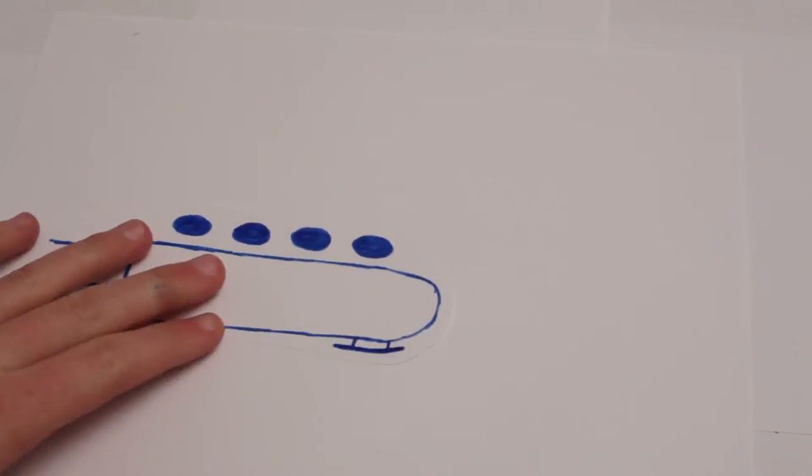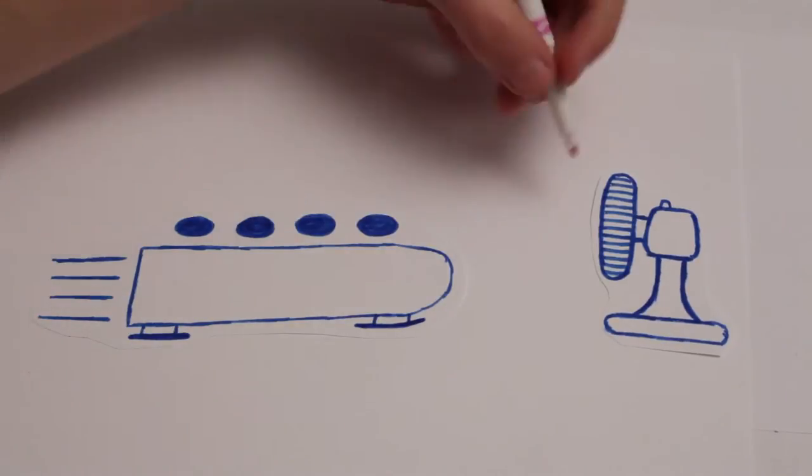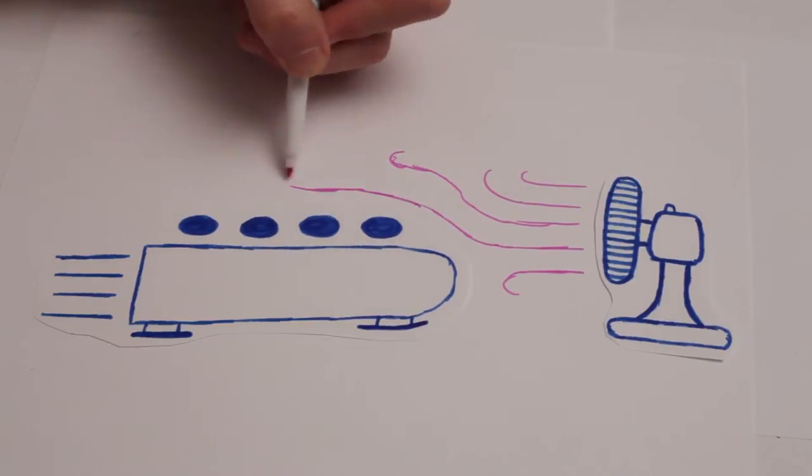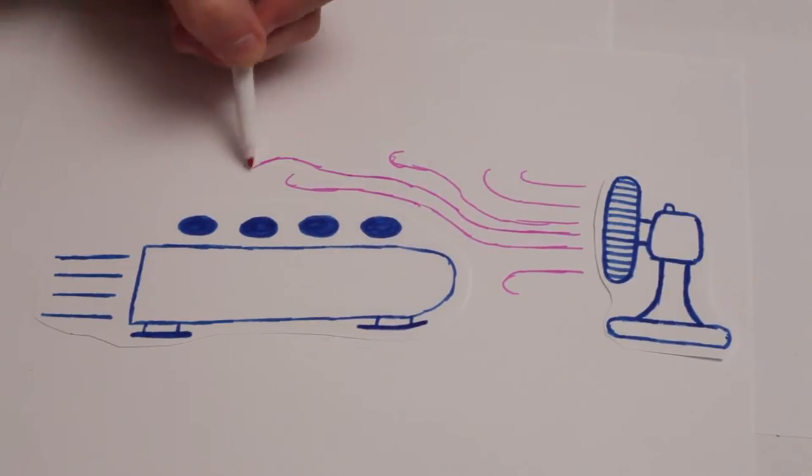Drag. When air passes around the bobsled, it creates drag. This drag slows the bobsled down. To minimize drag, teams use wind tunnels and even computer simulations to make their bobsleds as aerodynamic as possible.